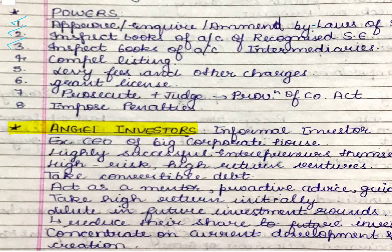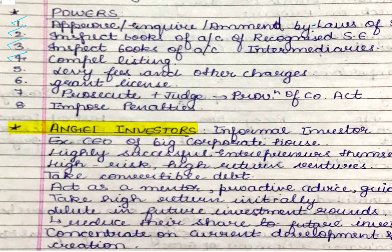SEBI can compel companies to list themselves on stock exchanges. Public companies are those whose shares can be publicly traded, so SEBI can force a public company to get itself compulsorily listed so that the trade of its shares becomes easier and there is complete clarity and transparency in their trading, with no ambiguity remaining.